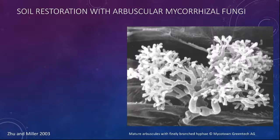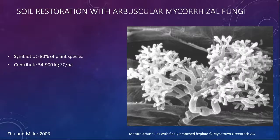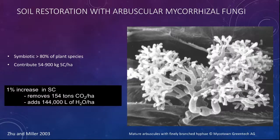The best way to reverse it is to restore the soil with arbuscular mycorrhizal fungi. This is a tiny component of fungi feeding the plant and receiving nutrients from the plant inside a plant cell, with hyphae sticking out looking like a little tree — therefore called arbuscular (arba meaning tree, scula meaning tiny). 80% of all plant species have this symbiotic relationship, if it hasn't been removed by current agricultural systems and spraying of pesticides. This contributes 54 to 900 kilograms of soil carbon per hectare.